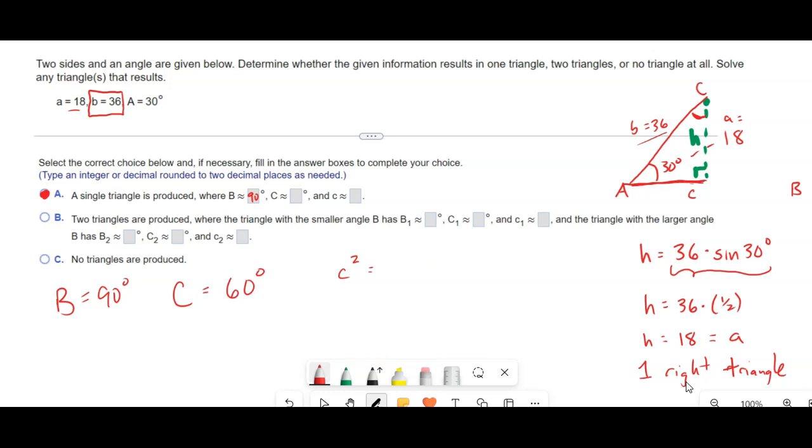little c squared, that's the leg. I'm just calling C the hypotenuse. C is the leg. That's equal to the hypotenuse, which is B squared, minus the other leg, which is A squared, the way I've got this written.